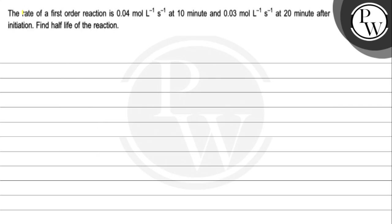Let's see this discussion: the rate of a first order reaction is 0.04 mole per liter per second at 10 minutes and 0.03 mole per liter per second at 20 minutes after initiation. Find the half life of the reaction.